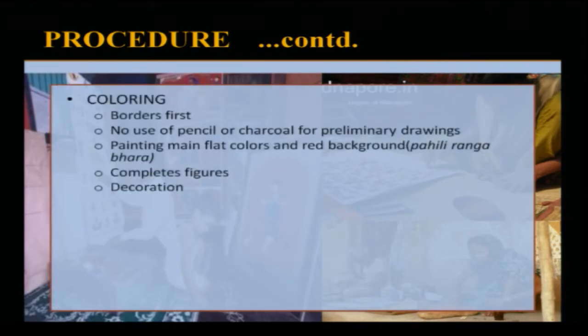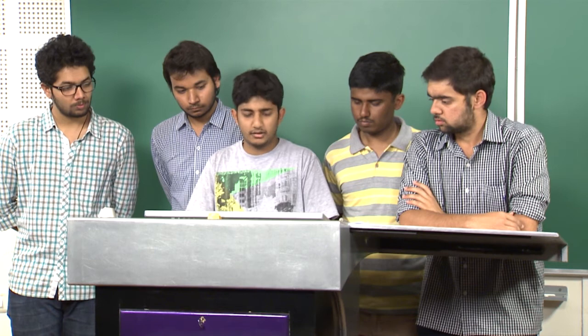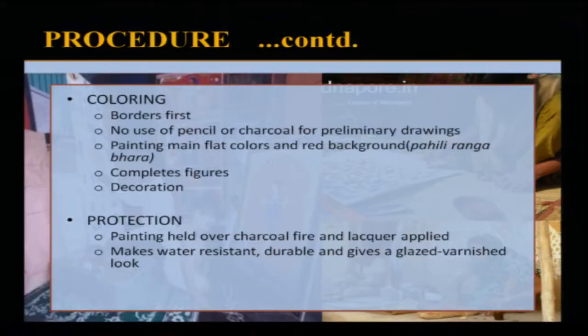In the coloring process, it is tradition to paint the border first — fascinatingly, there is no use of pencil or chalk for preliminary designs. Next, the main figures are painted and the red background, also known as Pahli Rang Bhara or first coloring, is done. Then the figures are completed and decorative pen work is added. For the final step, the painting is held over a charcoal fire and lacquer is applied, making it water-resistant, durable, and giving it a glazed varnish look.